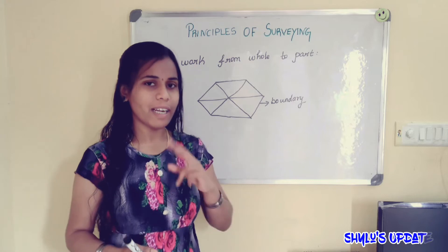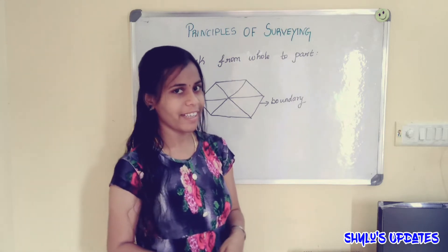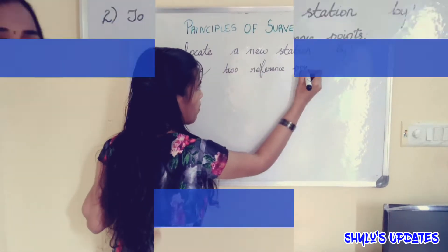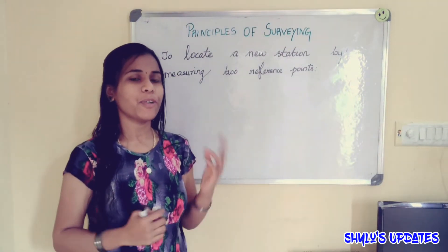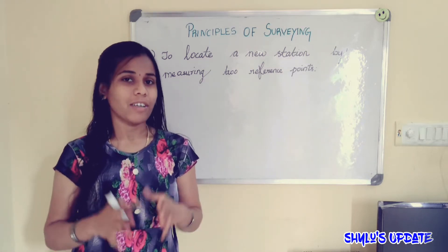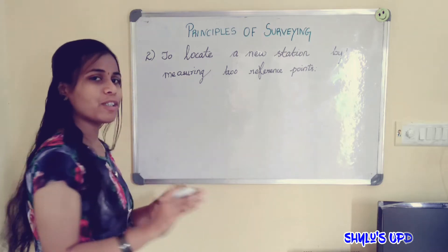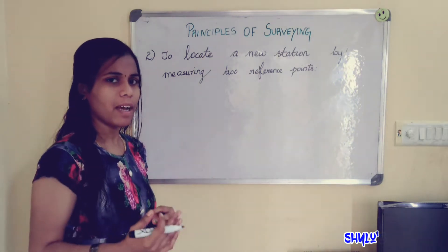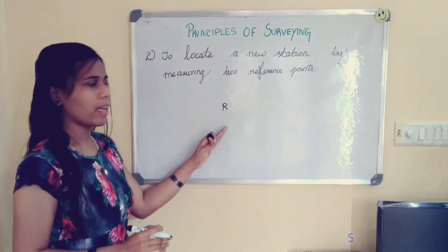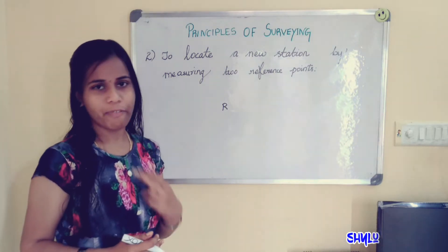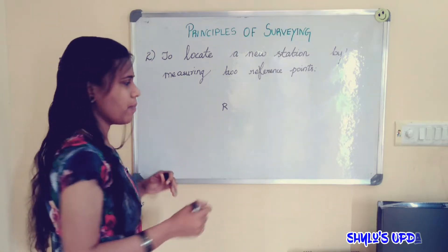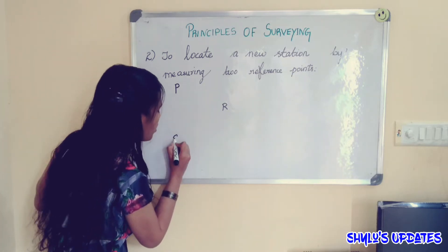Now let us see the second principle. The second principle is to locate a new station by measuring two reference points. Consider that you want to locate a new station — the new station may be R. To locate this new station, we need two reference points.